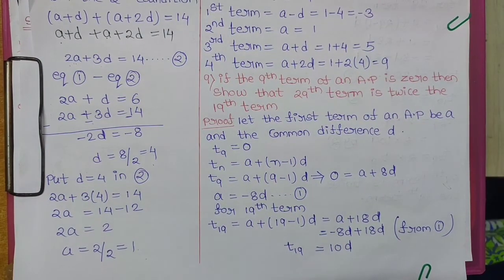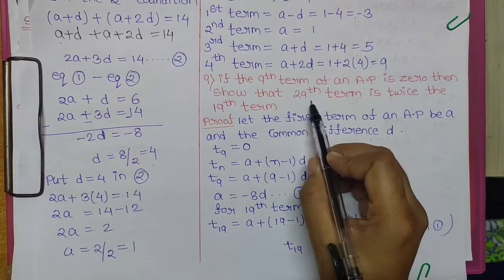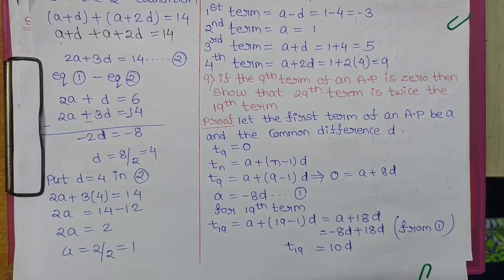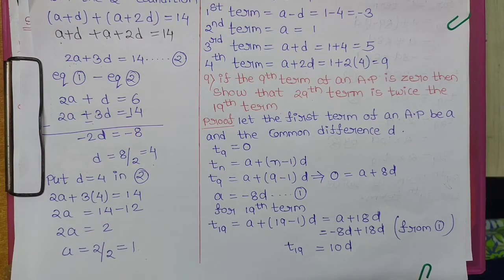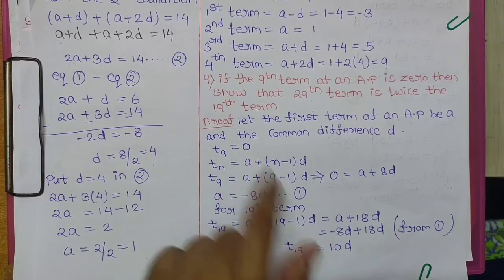Question 9: If the 9th term of an AP is 0, show that the 29th term is twice the 19th term — that is, prove T29 = 2 × T19. Let the first term be A and the common difference be D. Given: T9 = 0.